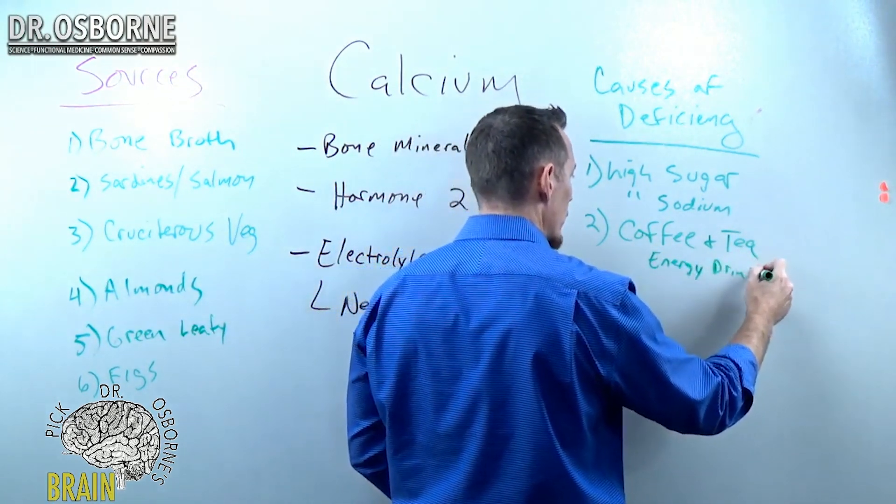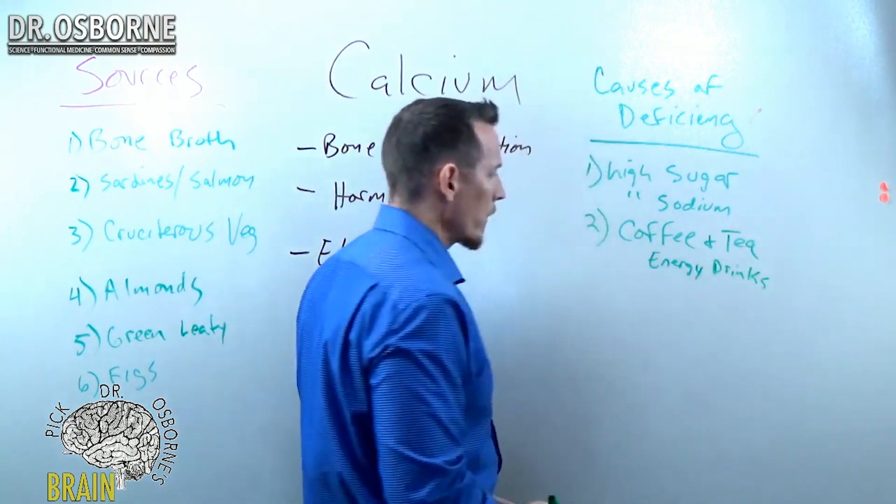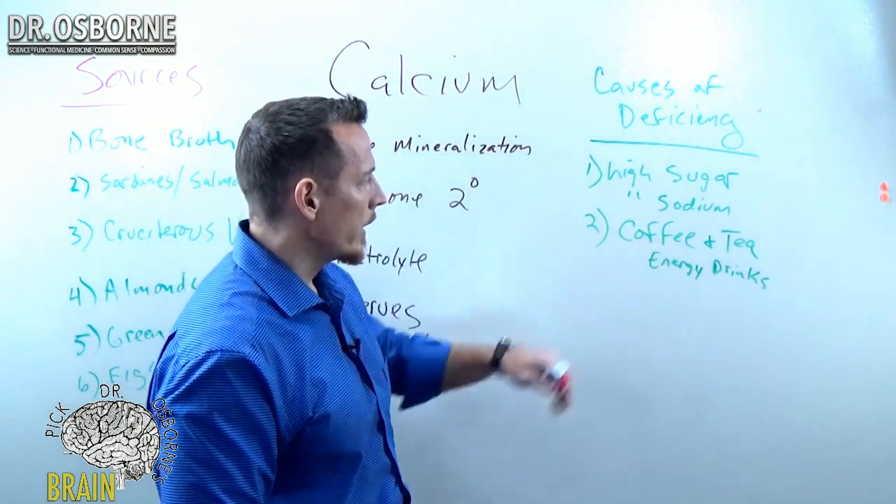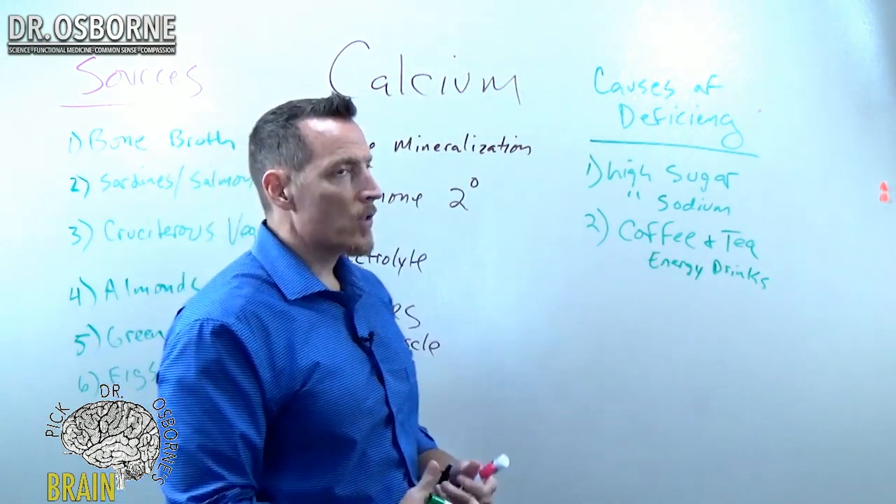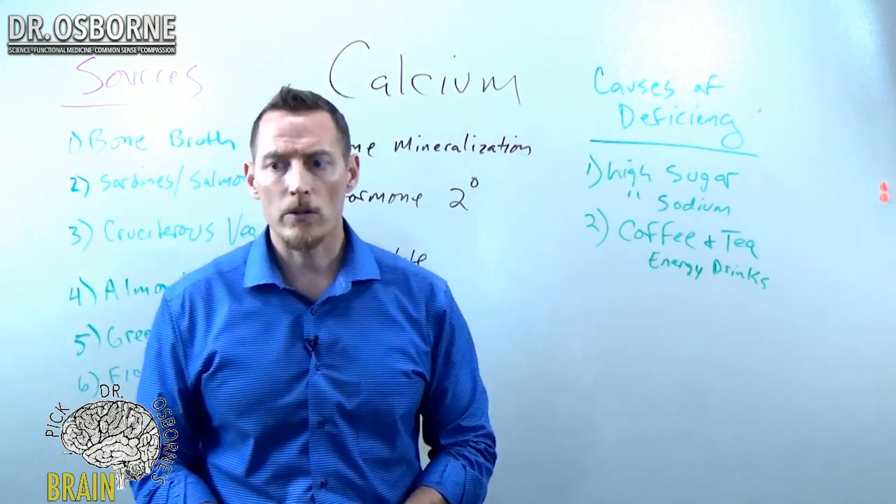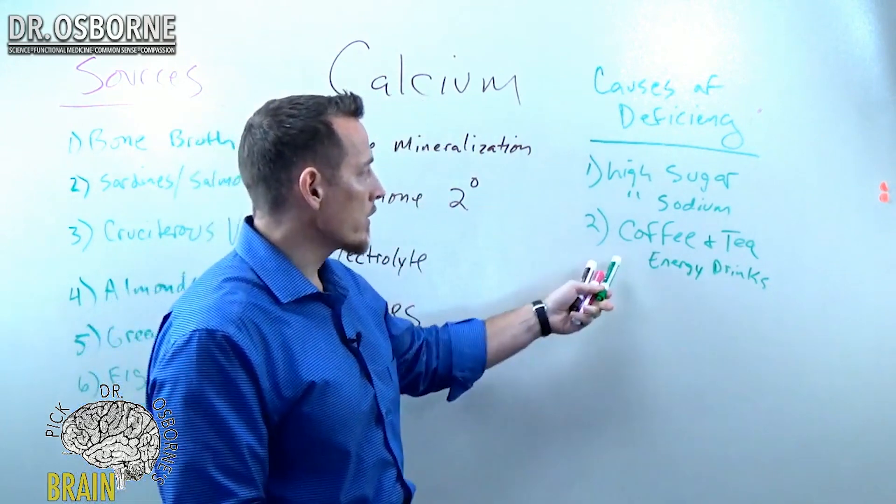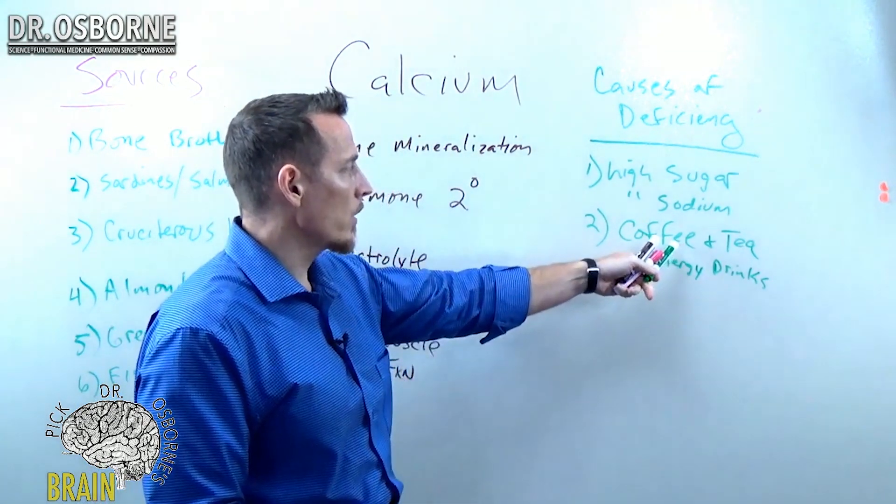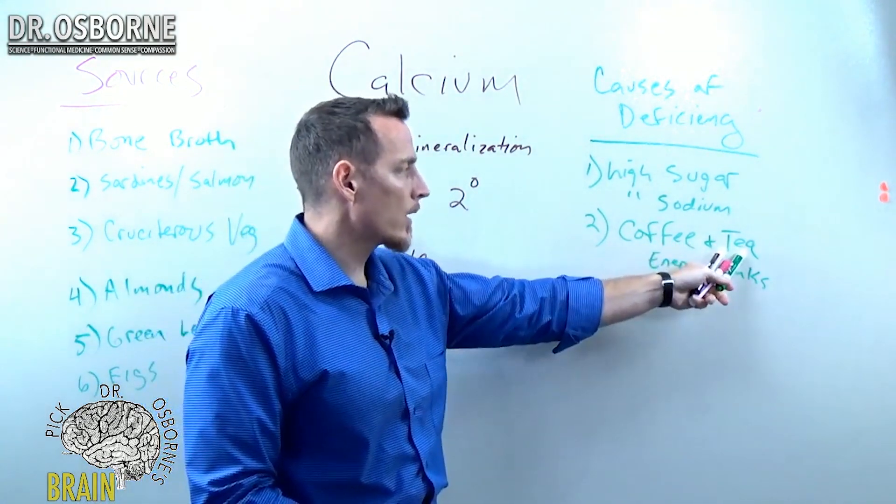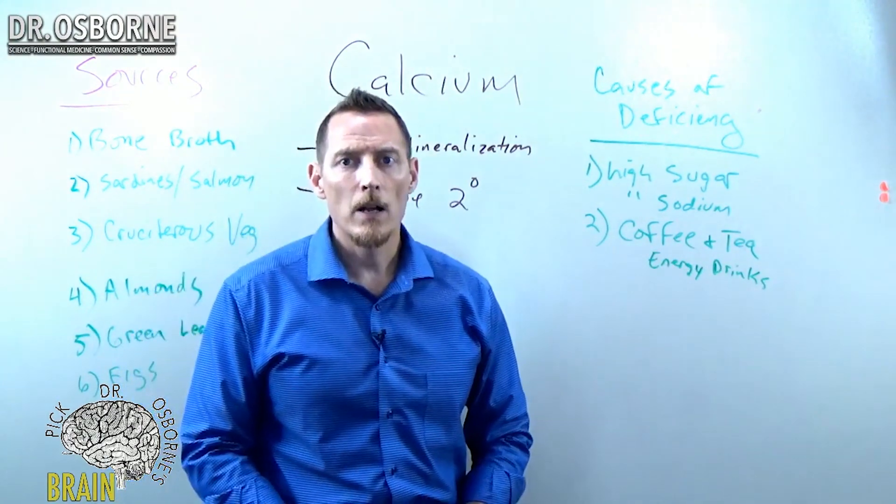So if you like your Red Bull or Monster or whatever it might be, these are things that excessive caffeine is going to cause calcium loss through the urine. So it's a really bad idea to overdo this. Now, does that mean you can't have a cup of coffee in the morning? No, it doesn't mean that. Does that mean you can never have a cup of tea? No.